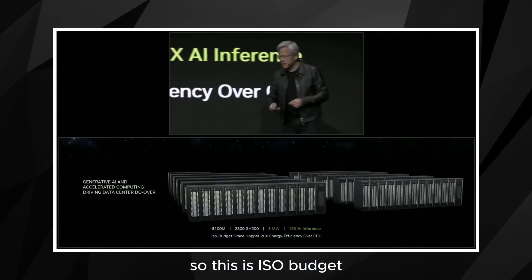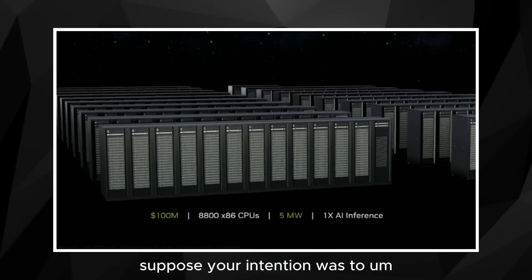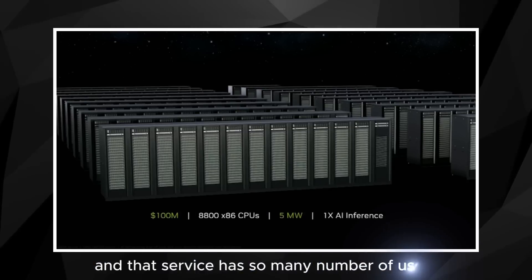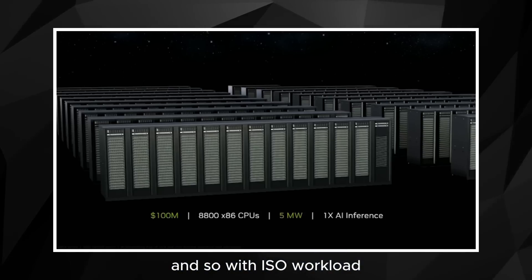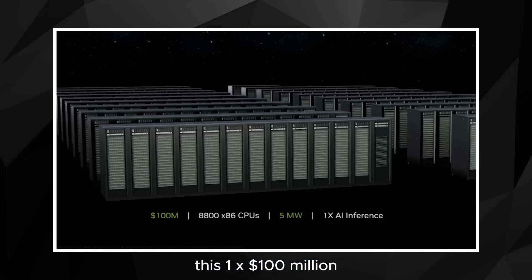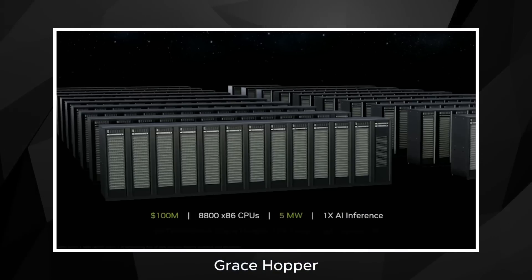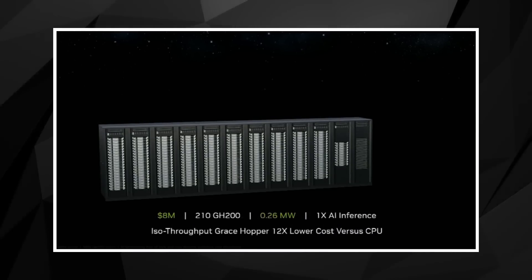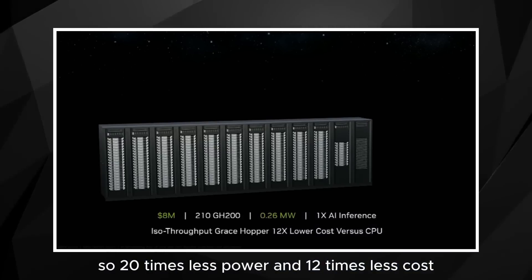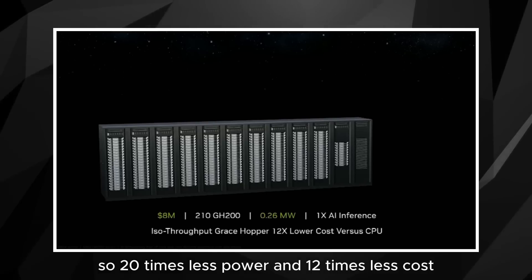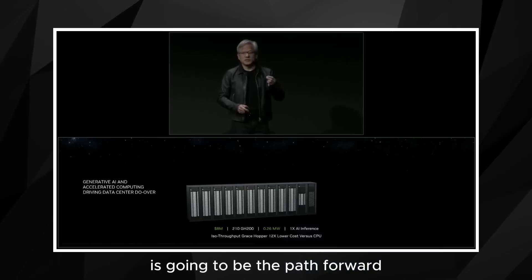This is ISO budget. Let's take a look at this now again with ISO workload. Suppose your intention was to provide a service and that service has so many number of users and so your workload is fairly well understood. And so with ISO workload, this 1x, $100 million using general purpose computing and using accelerated computing, Grace Hopper, it would only cost $8 million. $8 million and only 260 kilowatts. So 20 times less power and 12 times less cost.